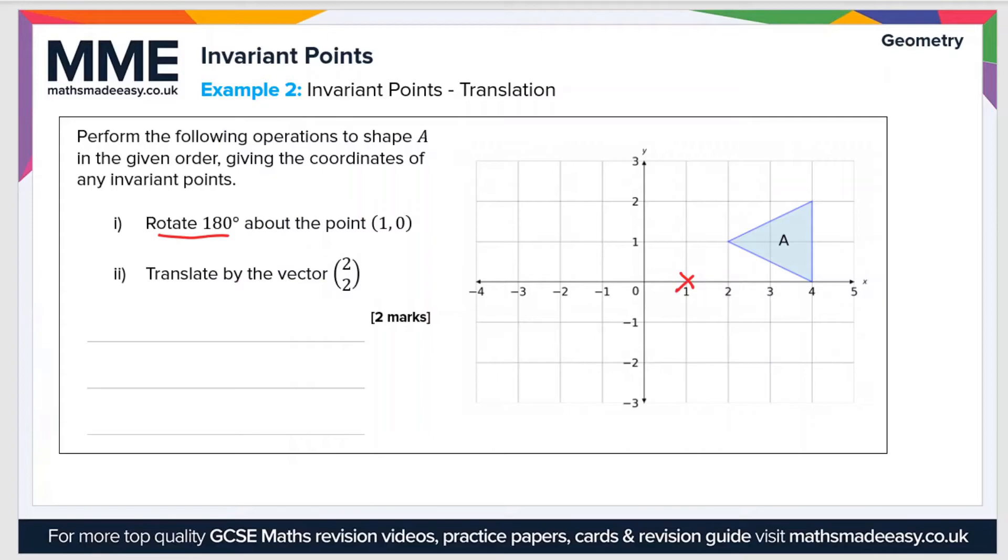And then we have to translate it by the vector 2, 2. But first we'll do the rotation. So here I'm going to do it point by point because I don't have any tracing paper. So for this corner of the shape here, it's diagonally one square across from the center of rotation. So it'll end up the same distance away when we rotate it 180 degrees.